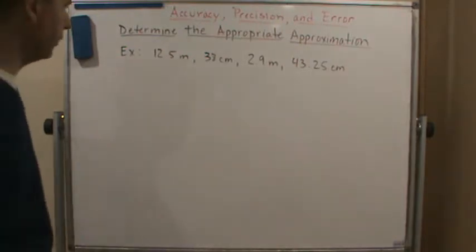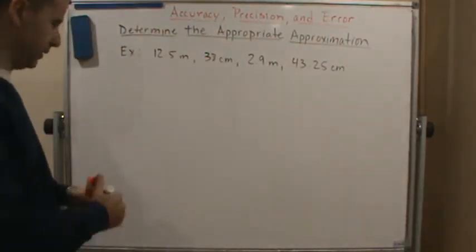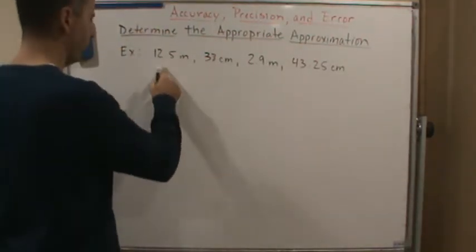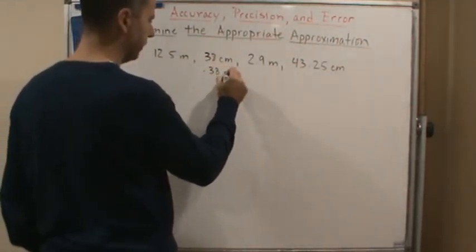So first thing we're going to do is we notice we have different units of measures. So we're going to change them all to meters. This is going to be 0.38 meters.